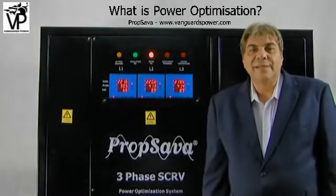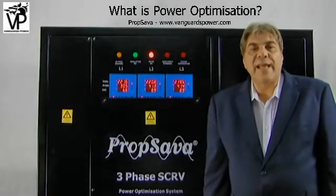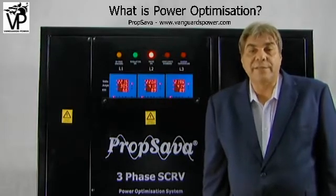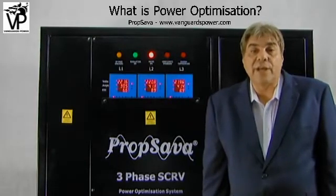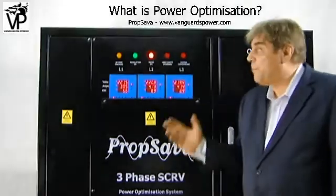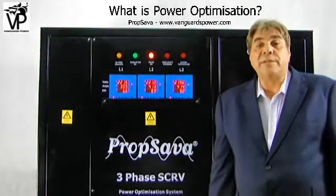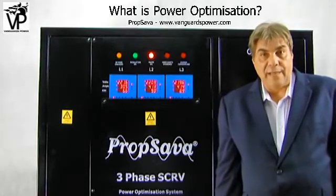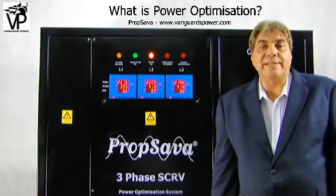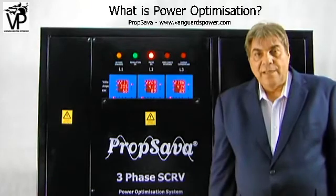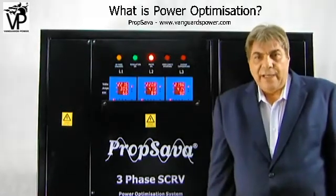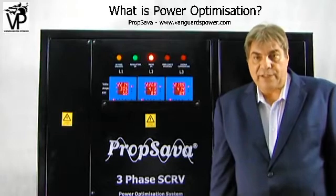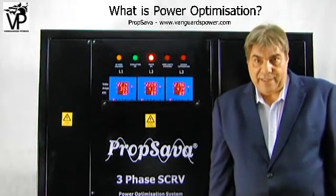Hello and welcome to Vanguard Power Introduction to Power Optimization using a third generation prop saver, which is an automatic voltage regulator and stabilizer — two machines in fact in one. The purpose of this video is to explain what power optimization is and its benefits.